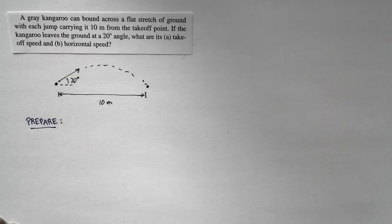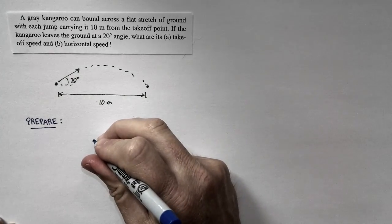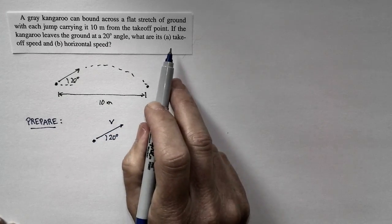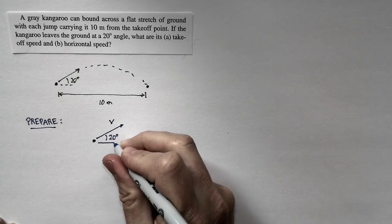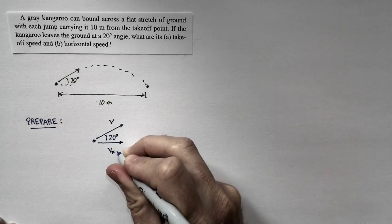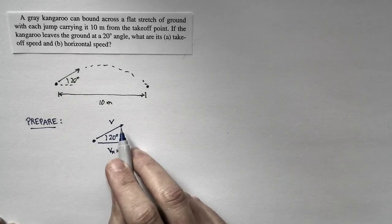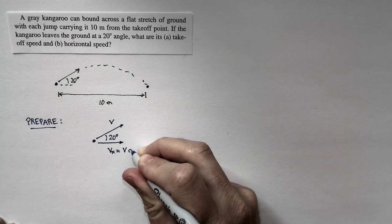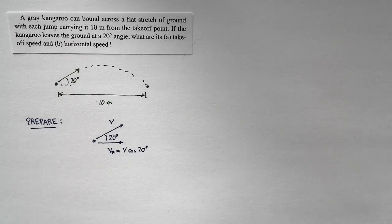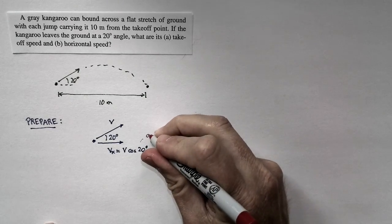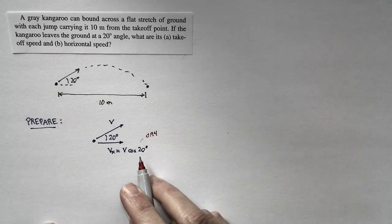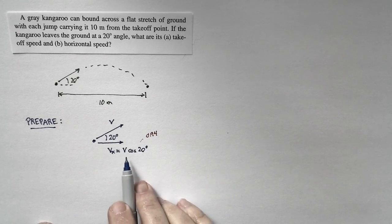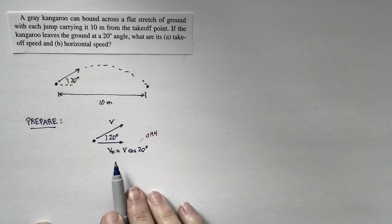Now that we know this, let's prepare to solve this problem. We're told that the kangaroo leaves the ground at a 20 degree angle, but we aren't told how fast — that's what we're trying to find: the takeoff speed. We're also looking for the horizontal speed, which is the horizontal component of the kangaroo's motion. If the kangaroo is taking off at a speed v, the horizontal component is just v times the cosine of 20 degrees. The cosine of 20 degrees is 0.94, which is very close to 1, so we expect the horizontal speed to be very close to the takeoff speed, and these two numbers will be quite close to each other.